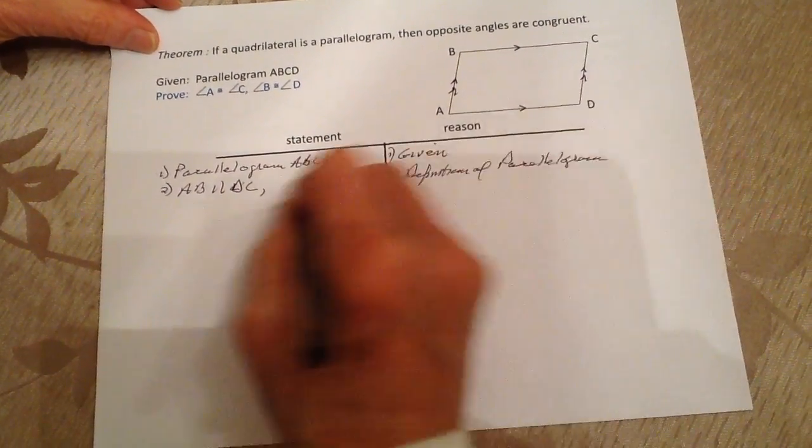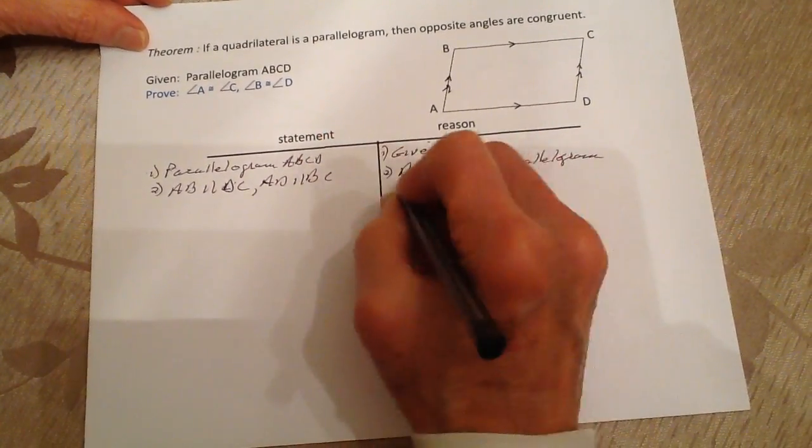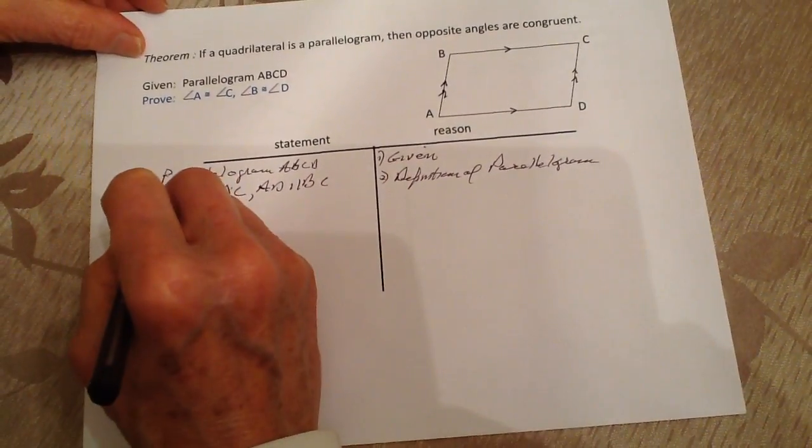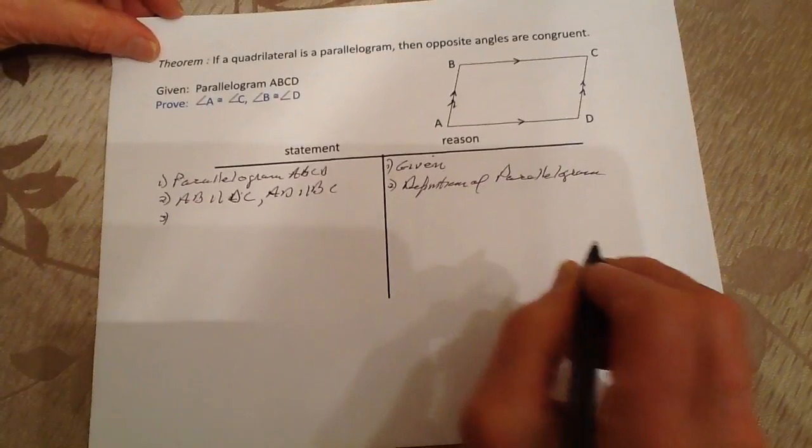Likewise, AD is going to be parallel to BC. That's the definition of a parallelogram: opposite sides are parallel.